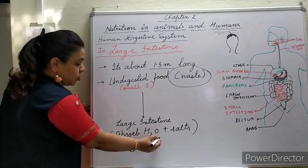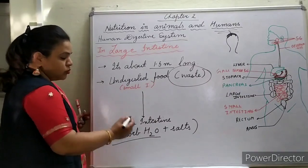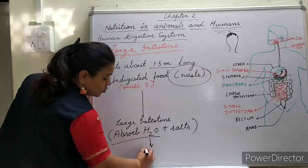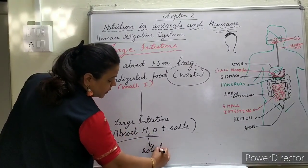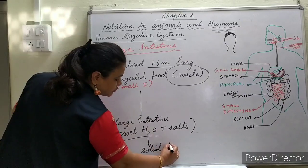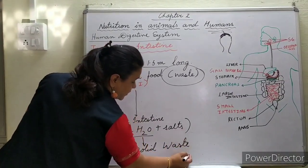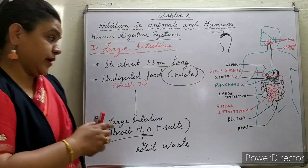When all this water is absorbed, what remains is solid waste. This solid waste then enters the rectum and is removed from the body through the anus.